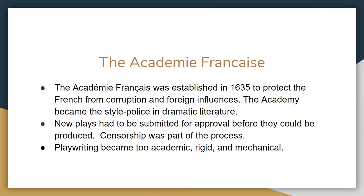One of the big things to remember about theatre at this time is that we see a lot of rules being placed on theatre. The organization mainly responsible for this was the Académie Française, established in 1635 to protect the French from corruption and foreign influences. They became the style police in dramatic literature. New plays had to be submitted for approval before they could be produced, and censorship was part of the process. As a result, playwriting becomes academic, rigid, mechanical.